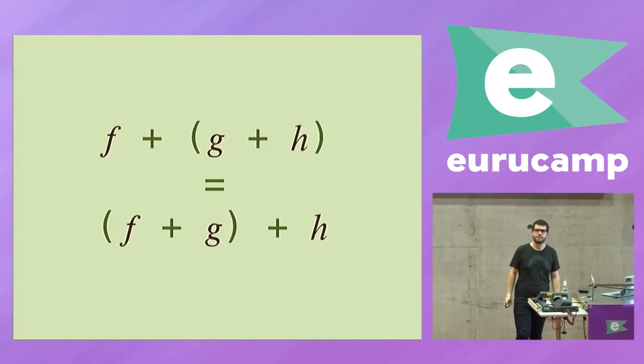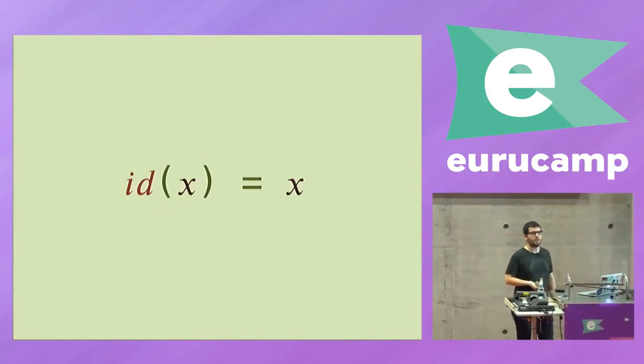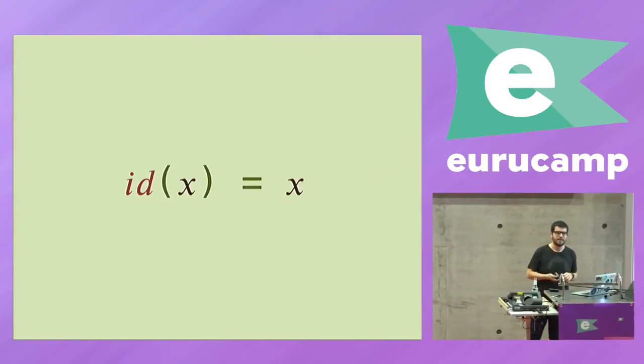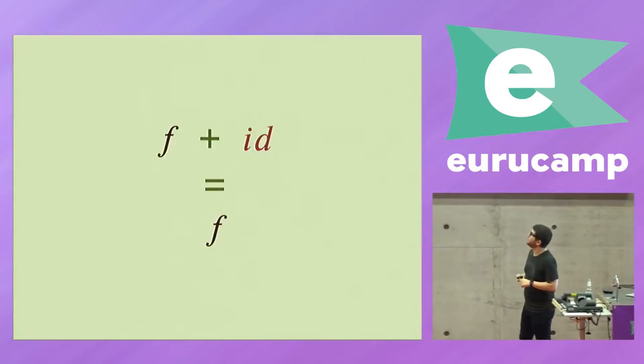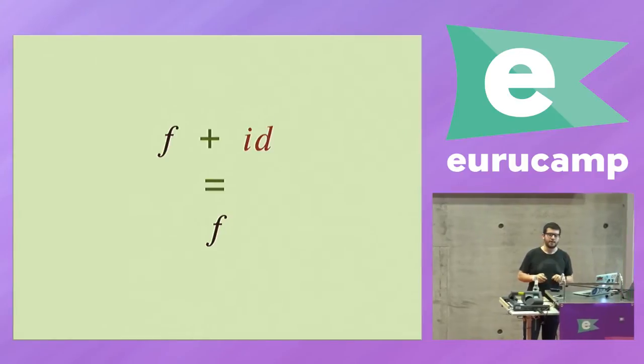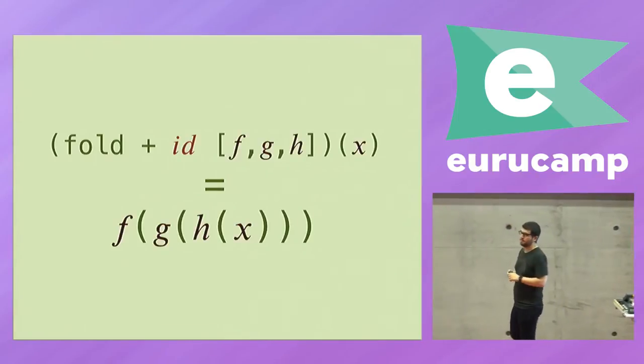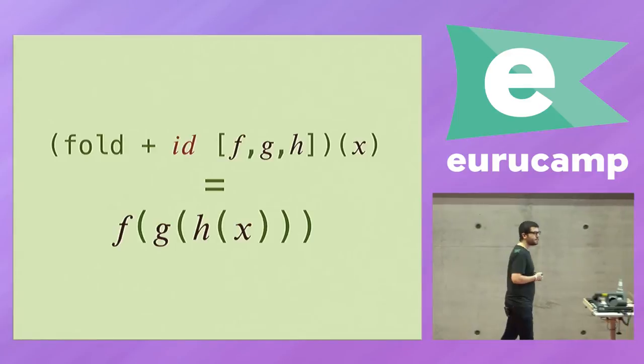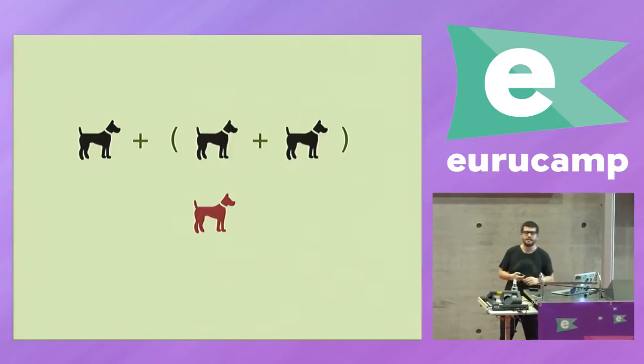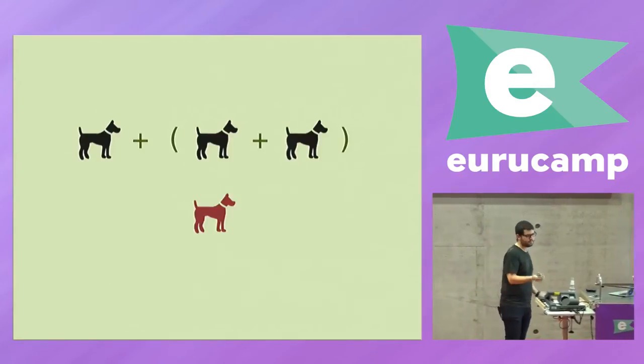But what about the neutral element? Do we have a zero for functions? Is there a function that does nothing? Well the identity function does nothing. It returns its argument. Fair enough. Let's see. Oh, that holds. You can compose f with the identity function and you get f back. So if everything I've said is true, you could fold over a list of functions and get the composition of all of them. So we've seen just by knowing these two things about functions, about a thing, we can fold over a list of those things and we can do much more stuff, but folding is just an example.